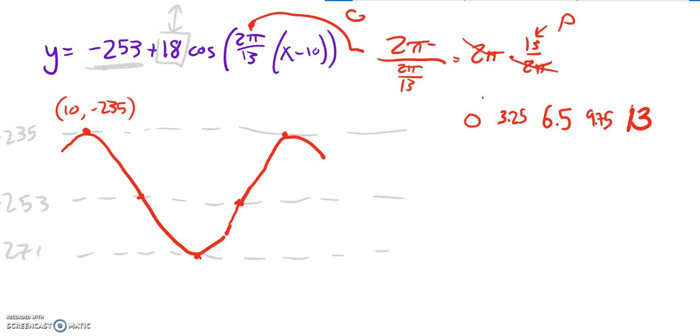But I'm moving everything right 10, so I need to add 10 to everything. So this would be 10, this would be 13.25, then 16.5, 19.75, and 23. So there are my x-coordinates, and I already know my y-values.